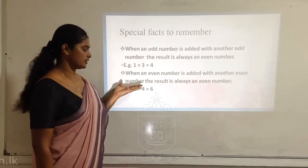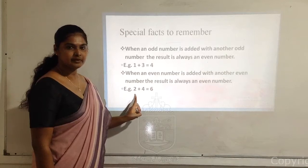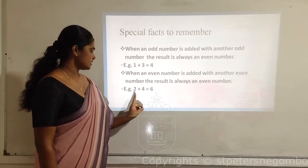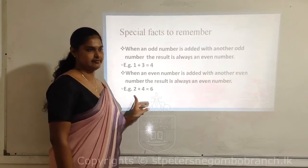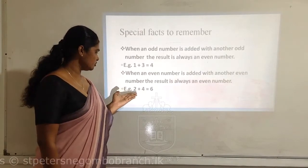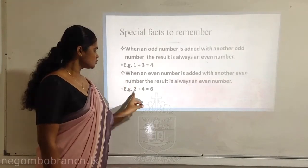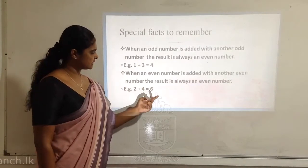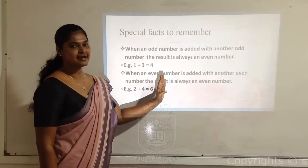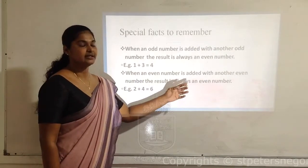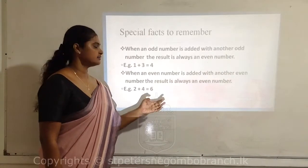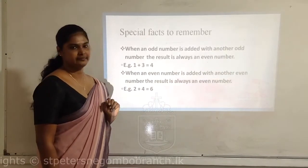The next example: 2 plus 4. Two is an even number and 4 is another even number. When you add 2 and 4 together, the answer is 6. That means when an even number is added with another even number, the result is always an even number.